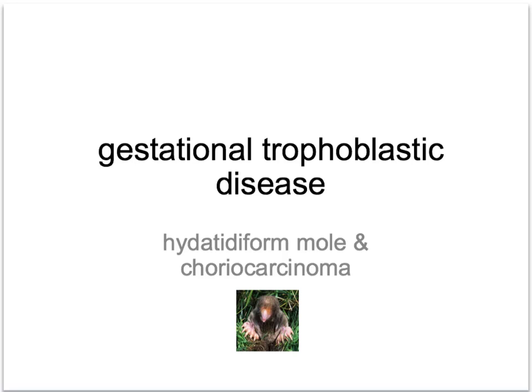Trophoblastic disease arises from a fertilized ovum that forms abnormal trophoblastic tissue but no fetus. Gestational trophoblastic disease covers a spectrum of conditions with pregnancy as the common antecedent. The disease can occur in any type of pregnancy including ectopic, full term, spontaneous abortion, and pregnancies resulting from in vitro fertilization. It is preceded by a molar pregnancy in 50% of cases.